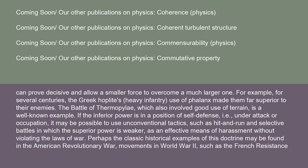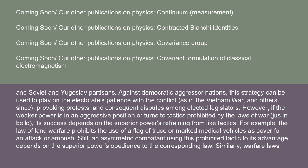If the inferior power is in a position of self-defense — under attack or occupation — it may be possible to use unconventional tactics, such as hit-and-run and selective battles in which the superior power is weaker, as an effective means of harassment without violating the laws of war. Classic historical examples may be found in the American Revolutionary War, resistance movements in World War II such as the French resistance, and Soviet and Yugoslav partisans. Against democratic aggressor nations, this strategy can be used to play on the electorate's patience with the conflict, as in the Vietnam War, provoking protests and disputes among elected legislators.